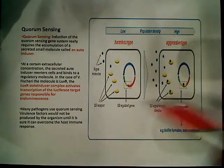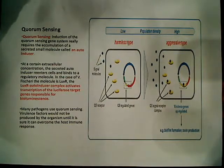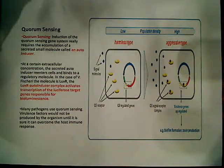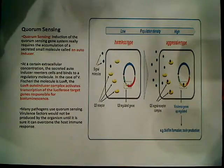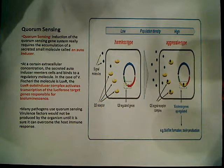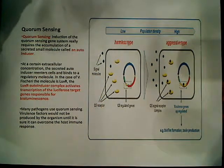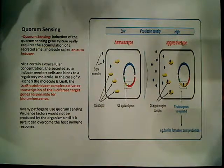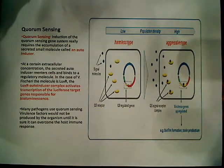In the specific example listed here, we have Vibrio fischeri, and the molecule that acts as an autoinducer is called LUXR — L-U-X-R. The LUXR autoinducer complex activates transcription of the luciferase target genes responsible for bioluminescence. So the autoinducer, along with LUXR, is able to activate the transcription of luciferase target genes, which allow for bioluminescence under certain circumstances.